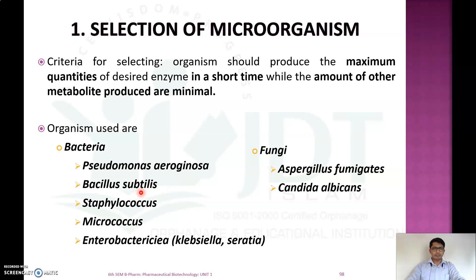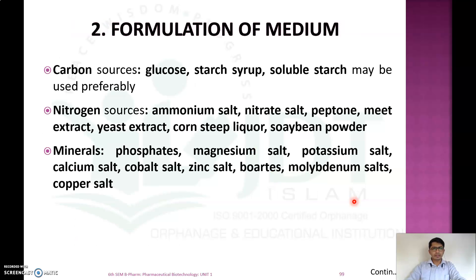Additional bacterial examples include Enterobacteriaceae like Klebsiella and Serratia. Examples of fungi used for catalase production are Aspergillus fumigatus and Candida albicans.